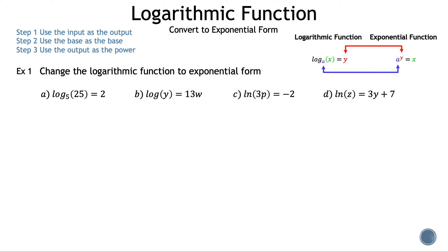Now let's read the question: change the logarithmic function to exponential form. Let's start with a: log of 25 with base 5 is equal to 2. We can remember the outputs and inputs change places when we convert, and if that doesn't help, we can always draw an arrow from the base to the output — in this case, 5 to 2. The 5 will be the base of the exponential, and 2 will be the power. We set that equal to the last number and our variable we haven't used, 25. So our exponential is 5 squared is equal to 25.